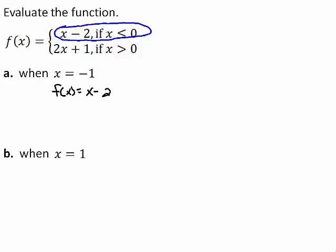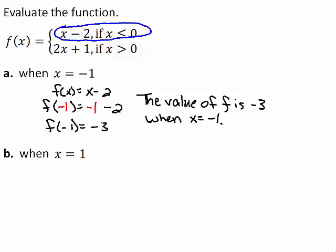To find the value of f when x equals negative 1, substitute negative 1 for x. Negative 1 minus 2 is negative 3, so the value of f is negative 3 when x equals negative 1.